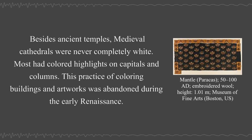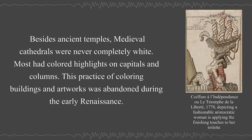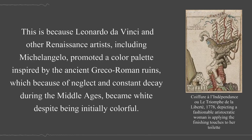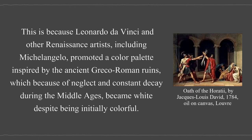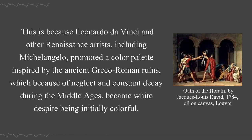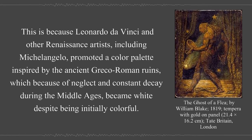Besides ancient temples, medieval cathedrals were never completely white — most had colored highlights on capitals and columns. This practice of coloring buildings and artworks was abandoned during the early Renaissance, because Leonardo da Vinci and other Renaissance artists, including Michelangelo, promoted a color palette inspired by the ancient Greco-Roman ruins which, because of neglect and constant decay during the Middle Ages, became white despite being initially colorful.